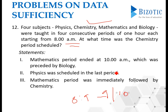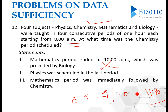Are we able to determine chemistry with just statement 1? Not yet. Statement 2: Physics was scheduled in the last period — so at 11 a.m., physics runs from 11 to 12. That leaves chemistry starting at 10. Statement 3: Mathematics period was immediately followed by chemistry. Both statements 1 and 2 together, or 1 and 3 together, let us determine chemistry's schedule.